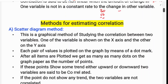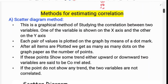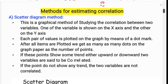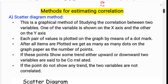Now we will see the methods of estimating correlation — how to estimate the correlation between two variables. There are various methods: the scatter diagram method, Karl Pearson's correlation coefficient, and Spearman's rank correlation.